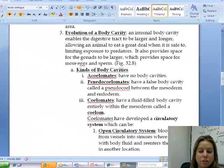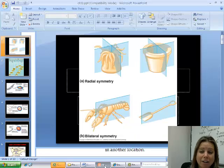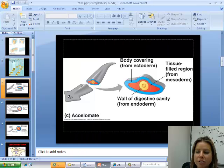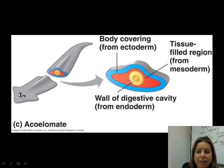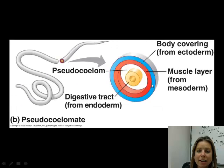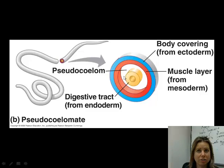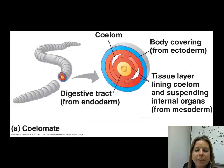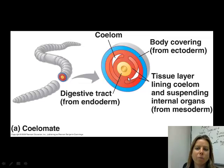Let's talk about what an open or closed circulatory system is, in addition to what that body cavity situation looks like. An acoelomate has no body cavity — it's completely solid all the way through. A pseudocoelomate has a false body cavity, visible as white space called a pseudocoelom. They can pump water into themselves, which helps them change shapes. A true coelomate has a coelom completely sealed off from everything else — that's what we are. We have that entire thoracic cavity sealed off from everything else.